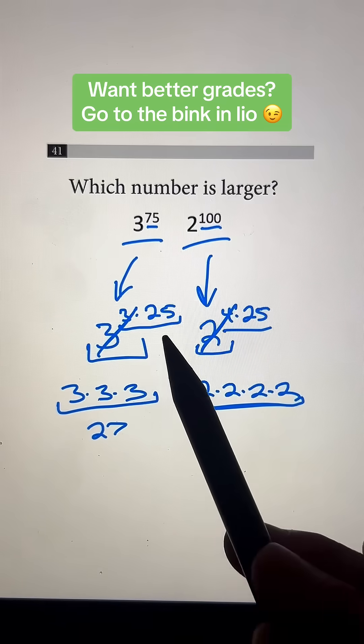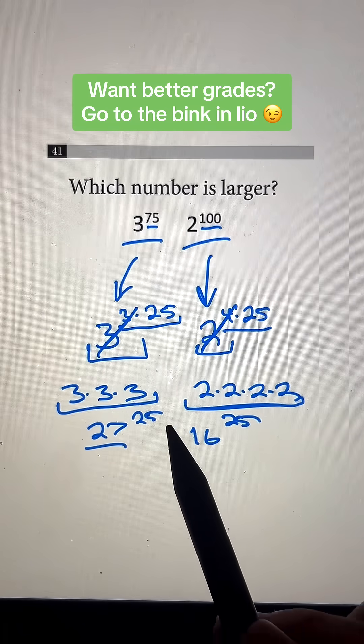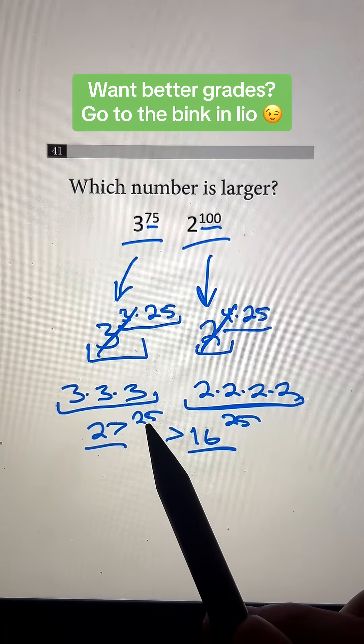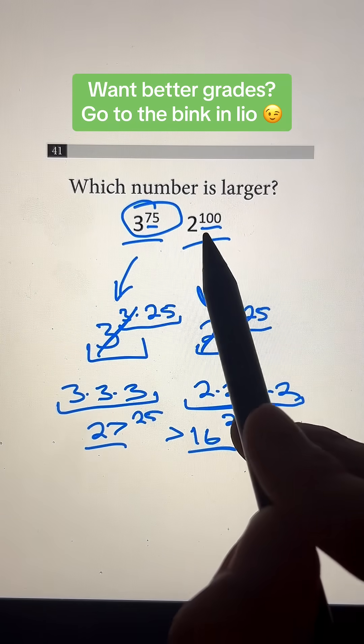And on the top, these are cancelled out. So we just have 25 here and 25 here. So 27 is clearly greater than 16. So 27 to the 25th power is greater, or 3 to the 75th power is bigger than 2 to the 100th power.